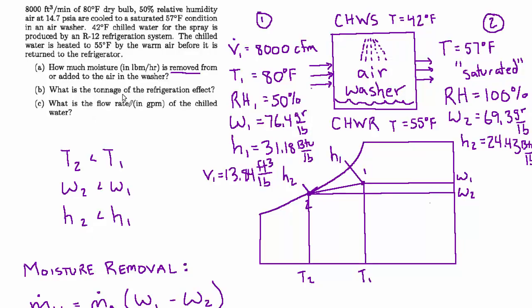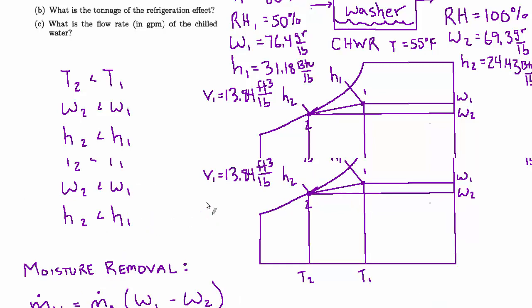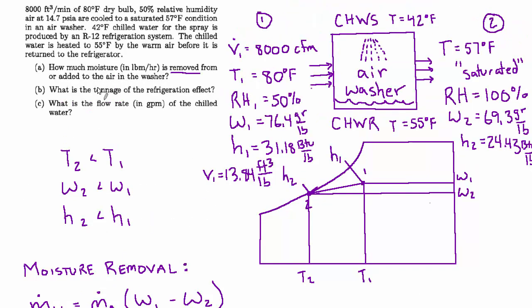Next, they wanted to know what's the tonnage of the refrigeration effect. So what we just dealt with in terms of change in the humidity ratio really only speaks to the latent cooling that's happened. Now they're asking the tonnage of the refrigeration effect, which includes in its entirety the net cooling. In this case, we had latent cooling and sensible cooling.